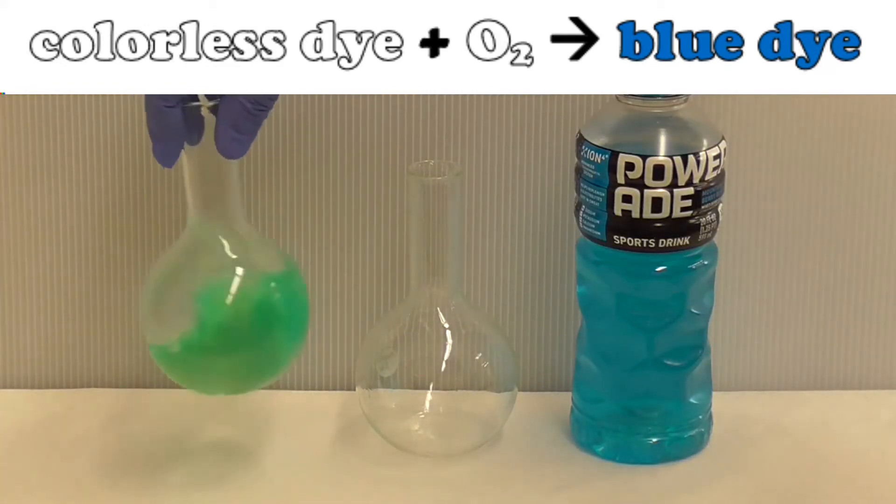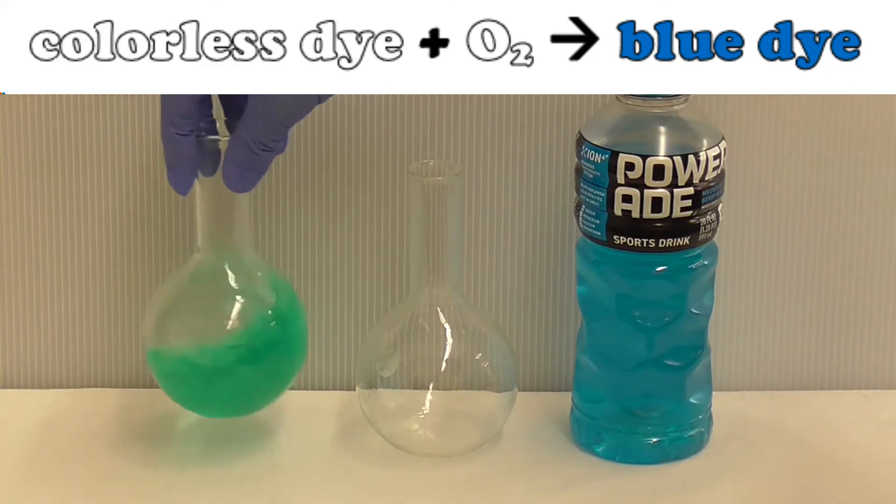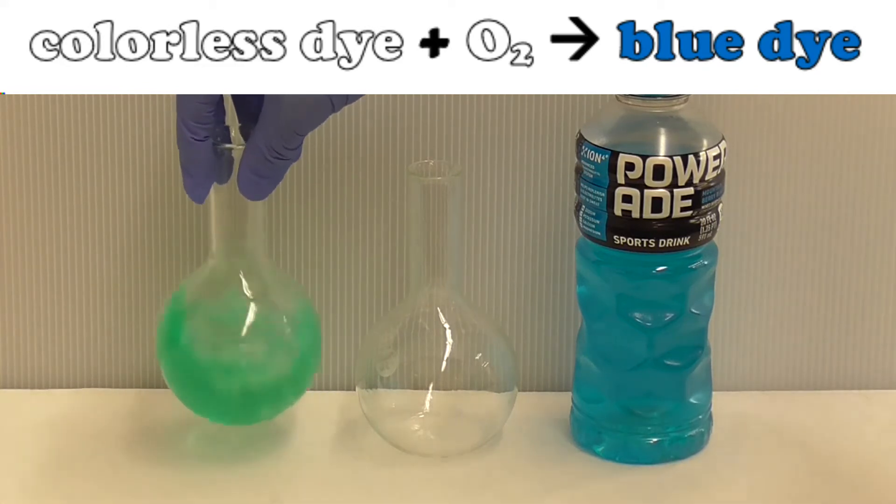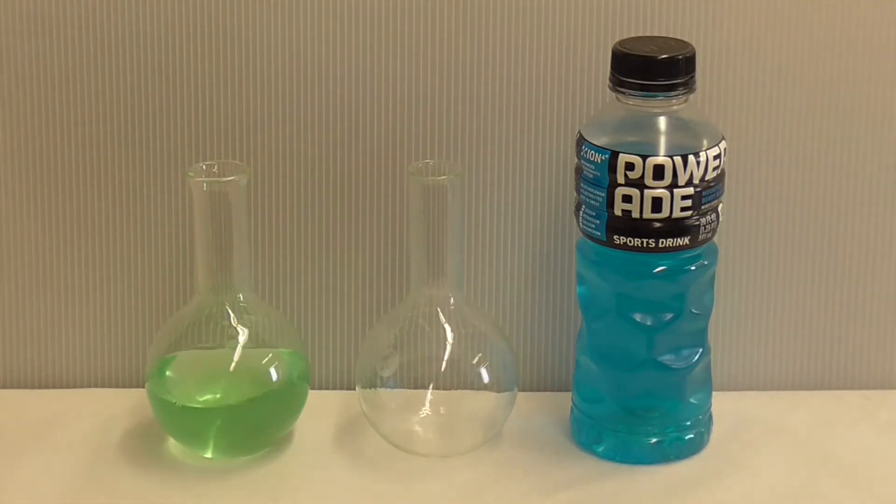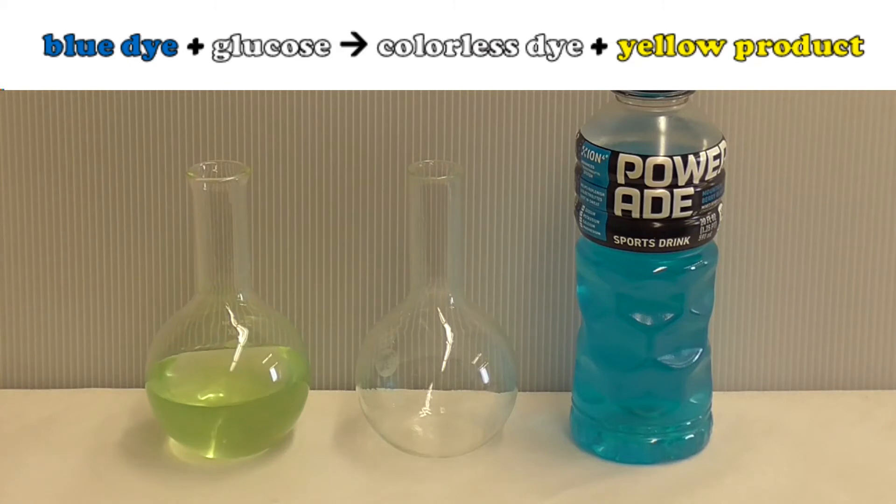I can get that too just by shaking the mixture. By shaking the mixture I get some oxygen from the atmosphere to go into the solution and that converts any colorless form of the dye that forms back to the blue form. And if you let it set, the glucose reduces the blue form of the dye back to the colorless form generating our yellow color.